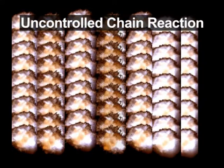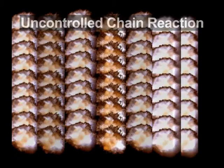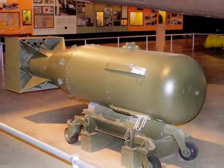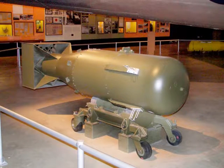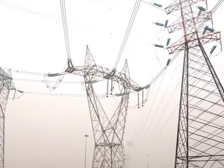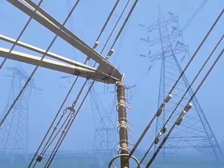Uncontrolled chain reaction, atom bomb is made on this basis. On the other hand, if the rate of release of energy can be controlled, then it can be used for useful work.